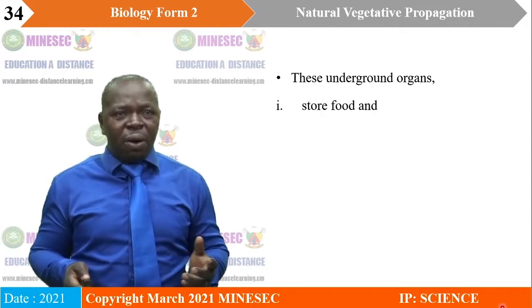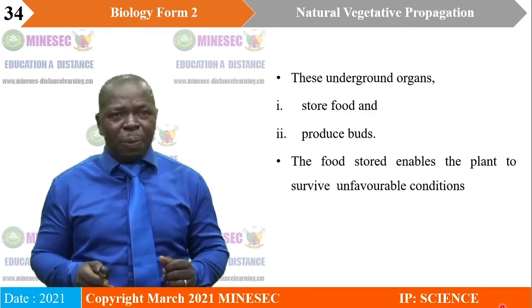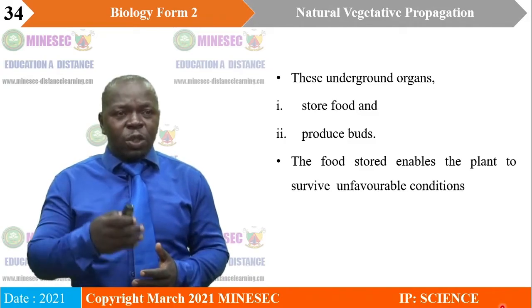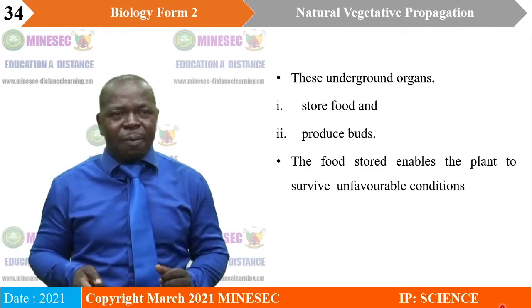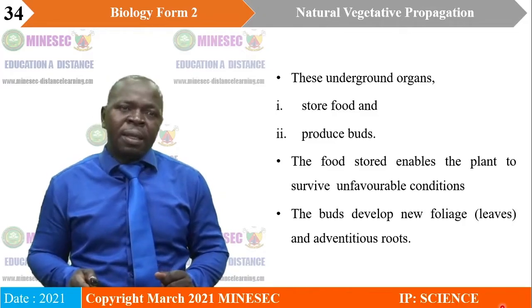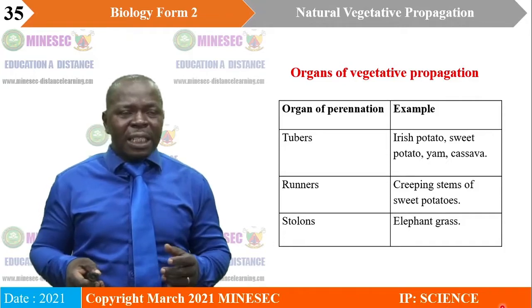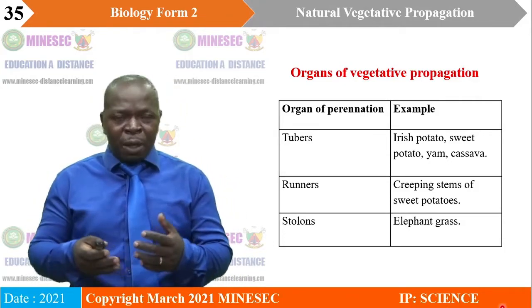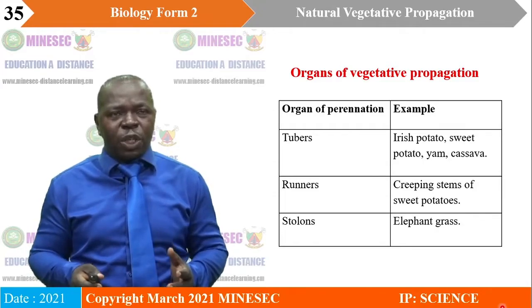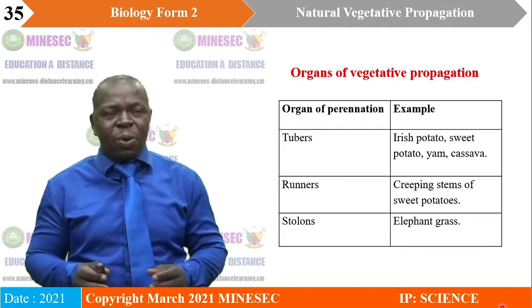Natural vegetative propagation occurs by natural means, that is without human intervention. A vegetative part of a plant grows and develops into a new plant. The plant is reproduced by means of underground storage organs. These underground organs should be able to store food and to produce buds, which enable them to develop into new plants. The stored food enables the plant to survive under unfavorable conditions and from one season to the other. The ability of plants to survive from one year to another is called perennation. The buds develop new foliage leaves, which function for photosynthesis, and adventitious roots that absorb water and mineral salts from the soil and also function for anchorage. Let us summarize these organs in the form of a table.